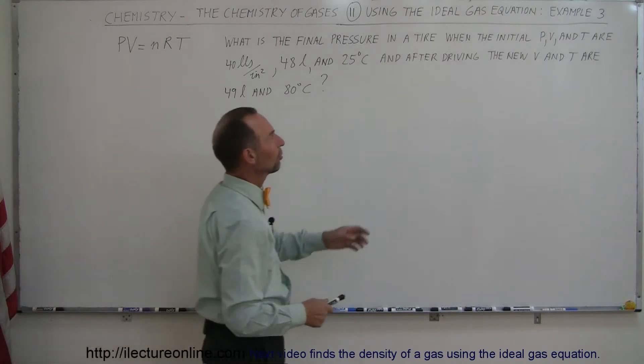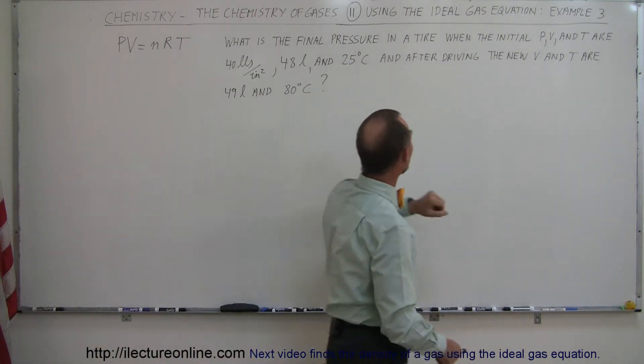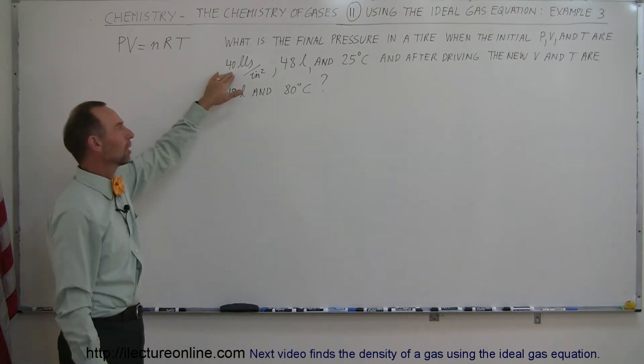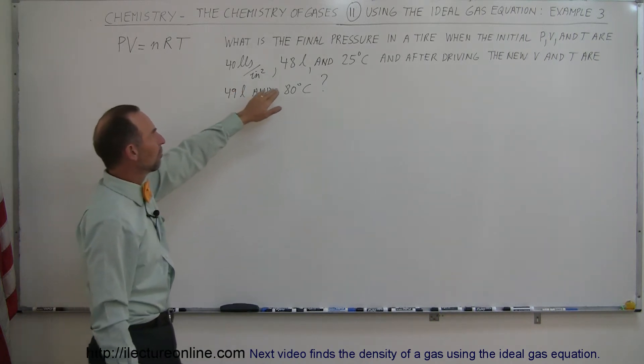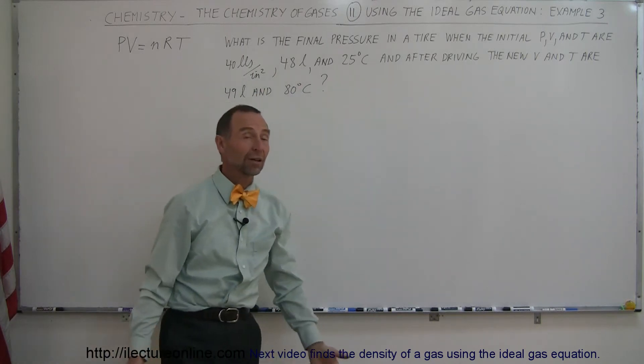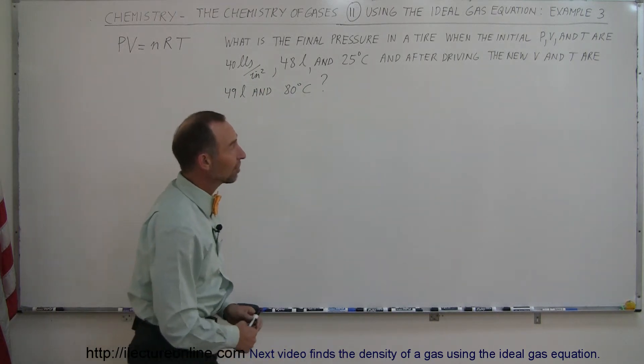The initial conditions for the pressure, the volume, and the temperature are that the pressure was 40 pounds per square inch, and we assume that to be the gauge pressure. The volume of the tire was 48 liters, and the temperature of the air inside the tire is 25 degrees centigrade.